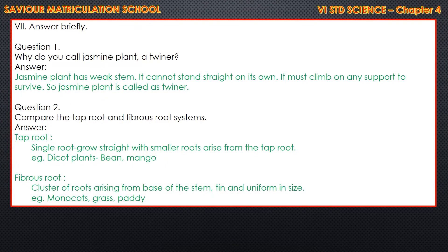Next, Roman number 7 in the book — short answer, children. First question: Why do you call jasmine plant a twiner? The answer is: jasmine plant has a weak stem. It cannot stand straight on its own, so it must climb on any support to survive. Therefore, jasmine plant is called a twiner.